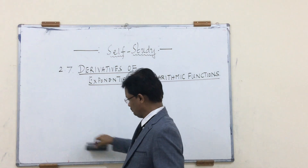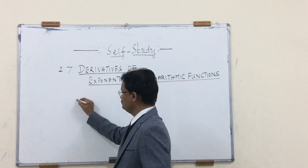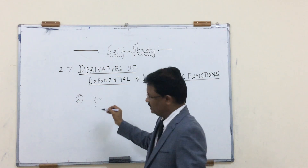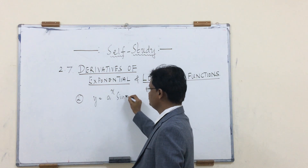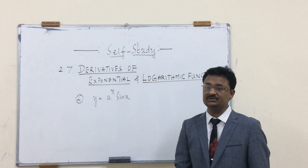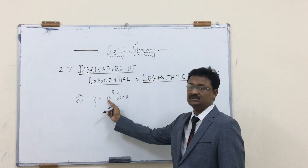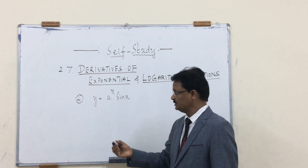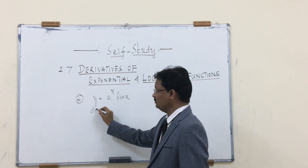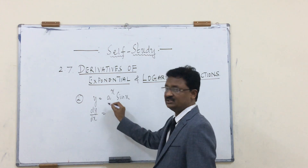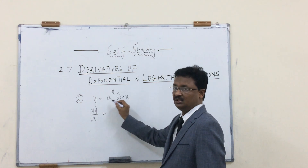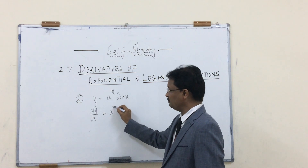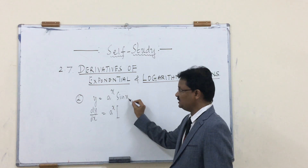Example 2: y = a^x · sin(x). Again this is a product of two functions — first an exponential function with base a, and second a trigonometric function sin(x). So to find dy/dx, we apply the product rule to differentiate this function.